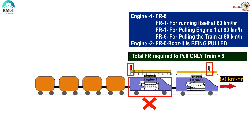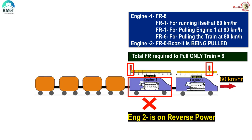To summarize: the fuel rack of engine one will be at eight — one rack to move itself, one rack to pull engine two, and six racks to pull the train at 80 km/h. Engine two, instead of contributing to pulling the train, is in fact getting pulled itself. We call this condition engine number two being in reverse power.